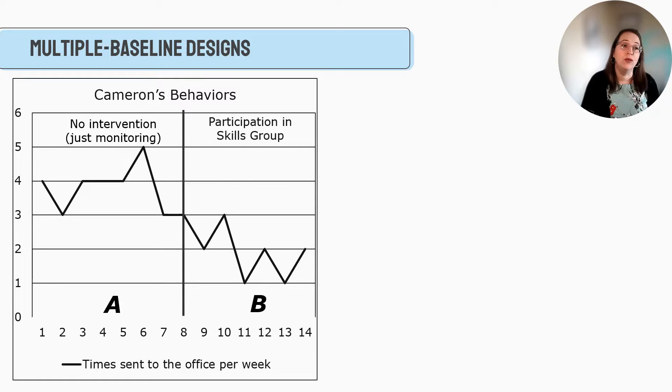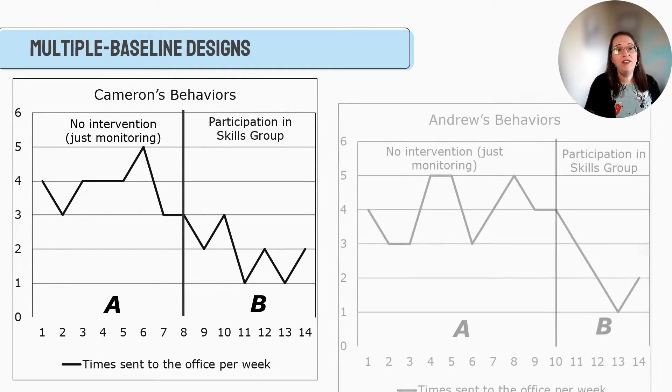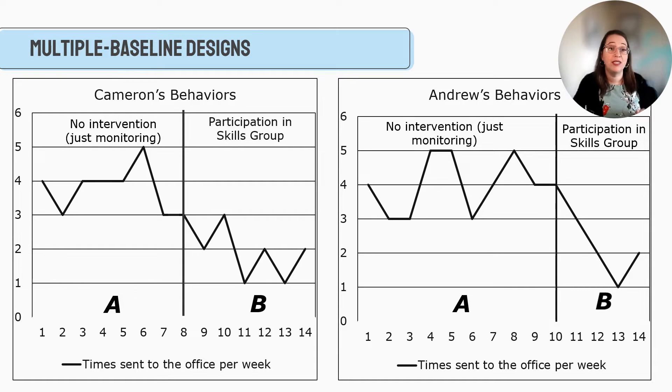Another technique that you can use is you can use multiple baseline designs. And so what this is, is we're saying, okay, we're going to do an AB design. Number of times sent to the office, no intervention for the first eight weeks. Then we're going to put him in this skills group and see if he has a change. This still doesn't really tell us a ton, but what if there's Andrew? And what if Andrew is at the same school, maybe a different grade or a different class, but he is also experiencing a similar issue. A lot of fights, a lot of trouble because of social issues. We monitor Andrew for 10 weeks.